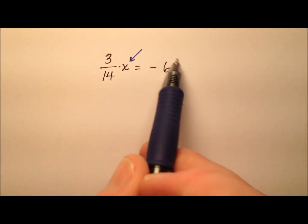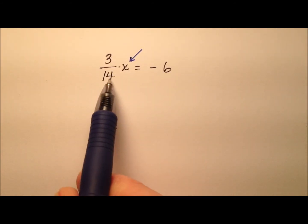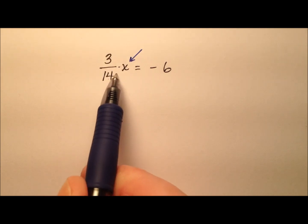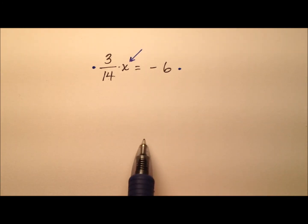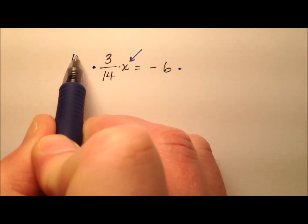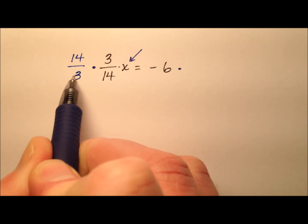So I would encourage you when you see these types of problems where you have a coefficient of your variable x that's a fraction, consider multiplying by the reciprocal. So we're going to multiply both sides by 14/3rds.